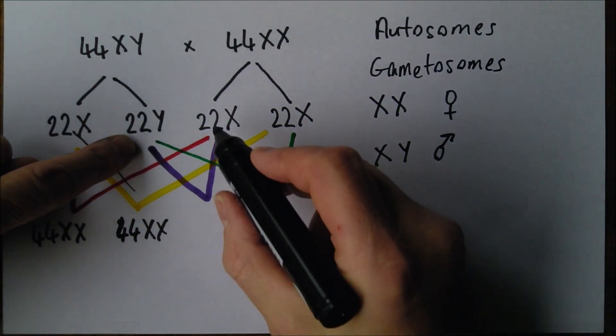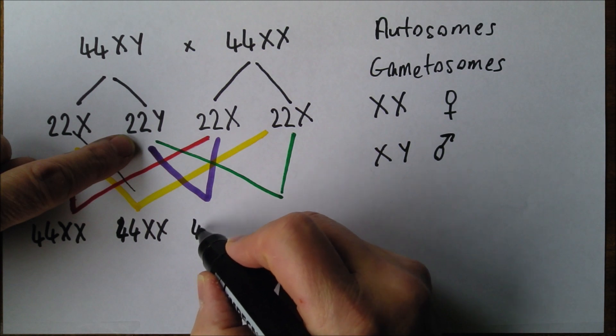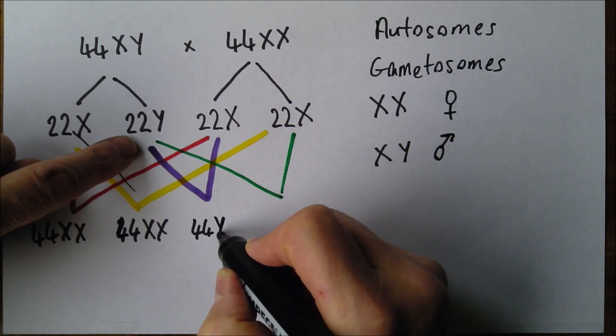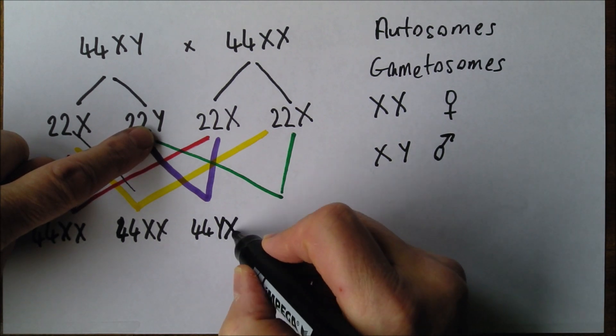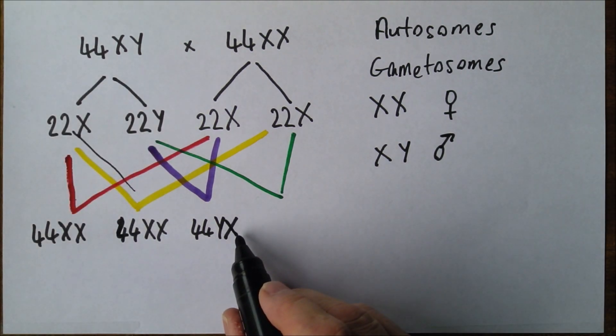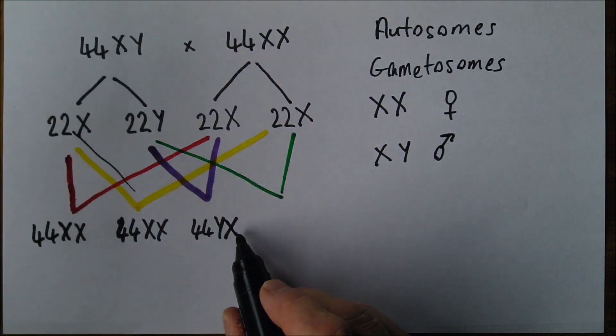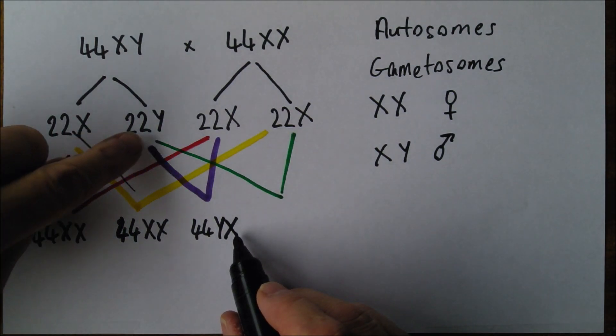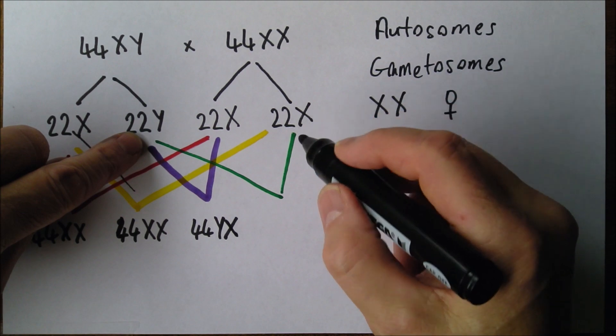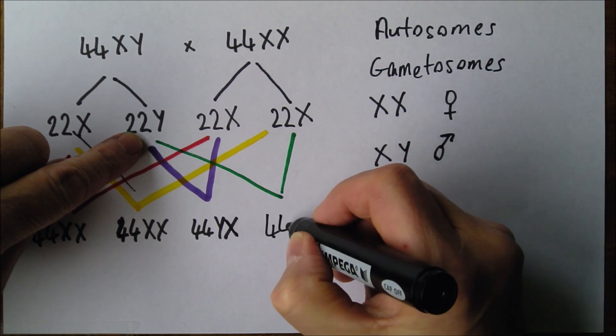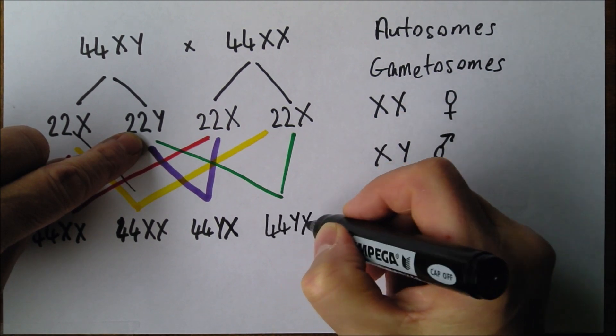Now that one and that one, again it's 44, but this time we've got a Y from the father's sperm and an X from there. So that's 44 YX or XY, which is a boy. Or if it was that sperm there fertilizing that ovum there, 44 plus a Y and an X again, or an XY.